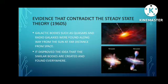Evidence that contradicts the steady state theory: the first is that galactic bodies such as quasars and radio galaxies were found a long way from the sun, at far distances from space. This disproves the idea that similar bodies are created and found everywhere uniformly, as asserted by the steady state theory.